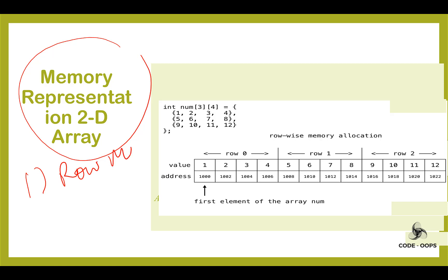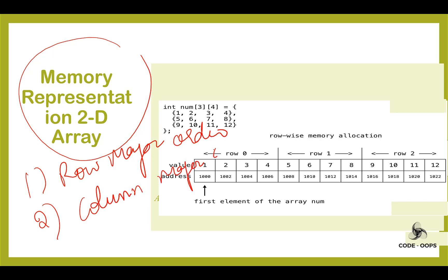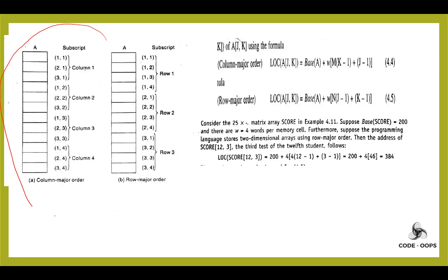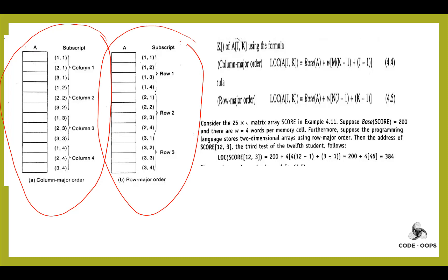The first way is row major order and the second way is column major order. In row major order, elements are stored row-wise: first the first row of the array, then the second row, then the third row, and so on. In column major order, elements are stored column-wise: first the first column, then the second column, then the third column, and so on. This is the column major order representation of a 2D array in memory, and this is the row major order representation.